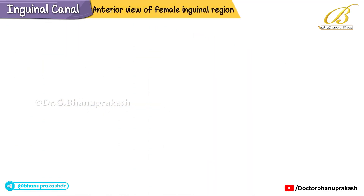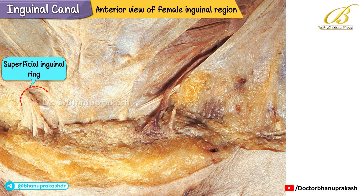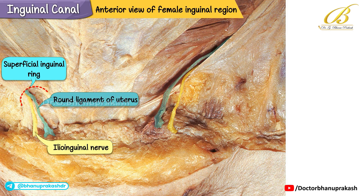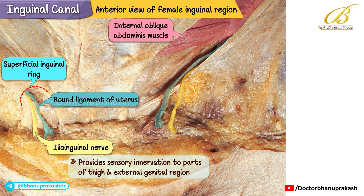Now let's shift attention to the interior view of the female inguinal region, which helps us understand how the structures differ slightly from those in the male. On the right side of this image you can clearly see the superficial inguinal ring and its contents. In females, instead of the spermatic cord, we find the round ligament of the uterus passing through this ring. Alongside it runs the ilioinguinal nerve, providing sensory innervation to parts of the thigh and external genital region.